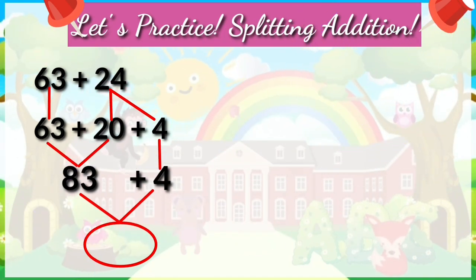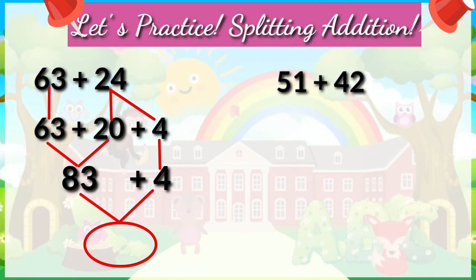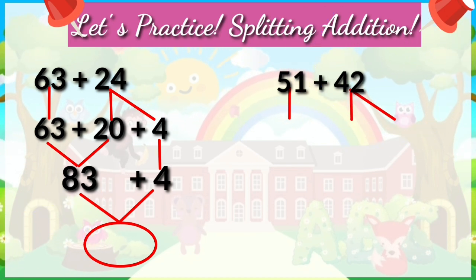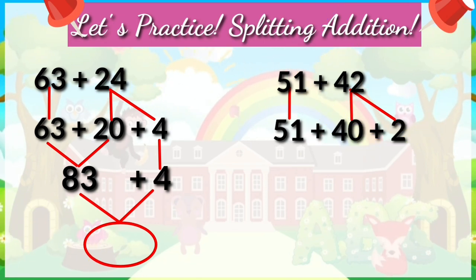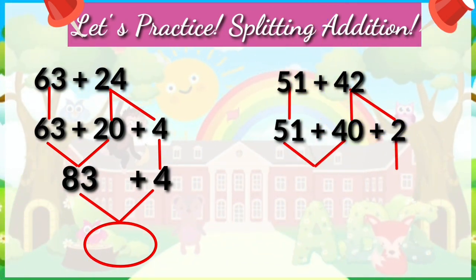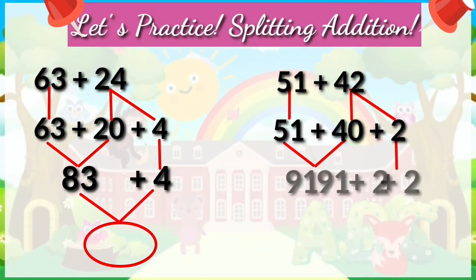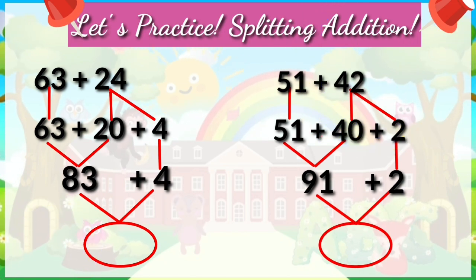Now let's try one more time. We have 51 plus 42. Just keep 51 as it is in your mind and split the second number. Then proceed to addition by adding all the numbers from left to right. Have you gotten the correct answer this time? Great job!